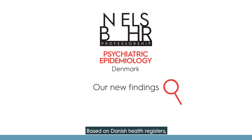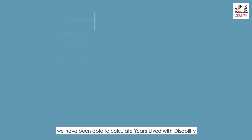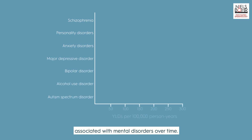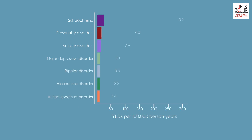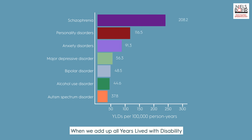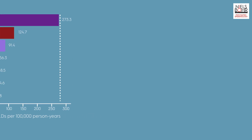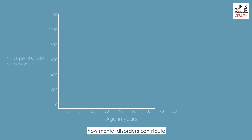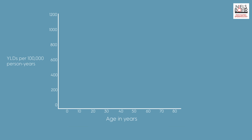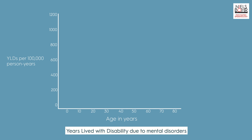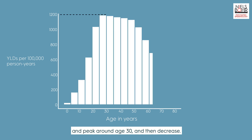Based on Danish health registers, we have been able to calculate years lived with disability associated with mental disorders over time. When we add up all years lived with disability related to mental disorders for the entire population, we found that schizophrenia accounted for most years lived with disability. We have also been able to show how mental disorders contribute to years lived with disability across the lifespan. Years lived with disability due to mental disorders start in early childhood and peak around age 30, then decrease.